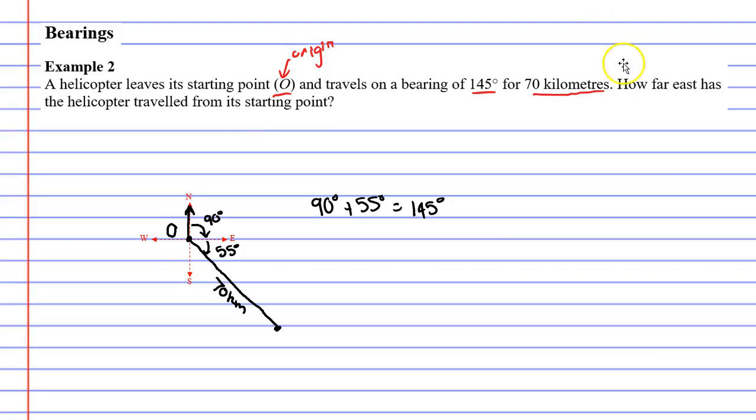Now finishing off the question, it says how far east has the helicopter travelled from its starting point? What we need to do here is we need to draw a right angle triangle. And this is key for working out these questions. Get the right angle triangle drawn first and then try and solve it.